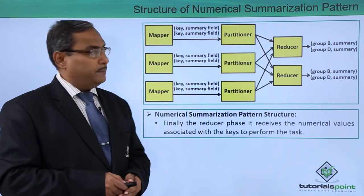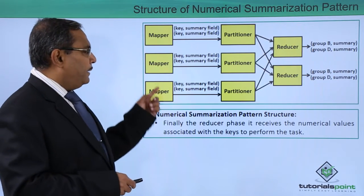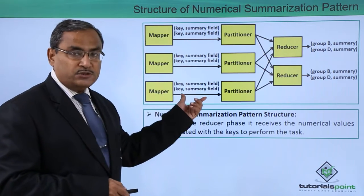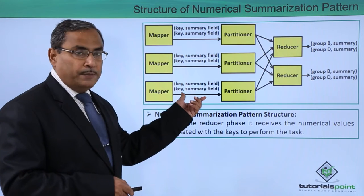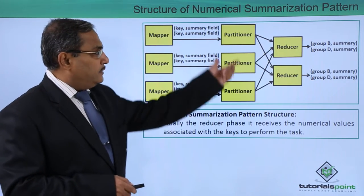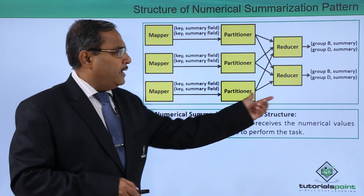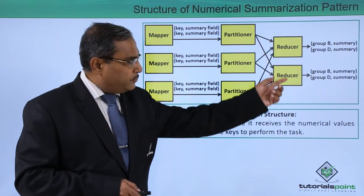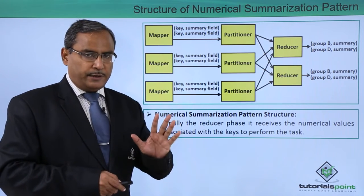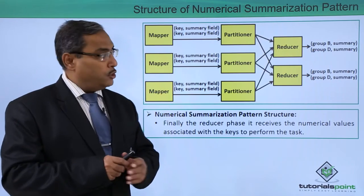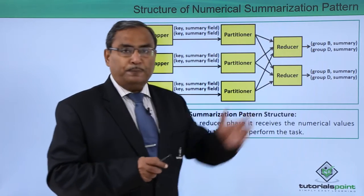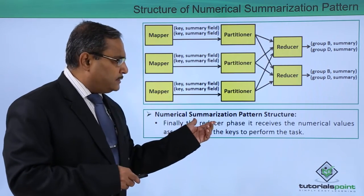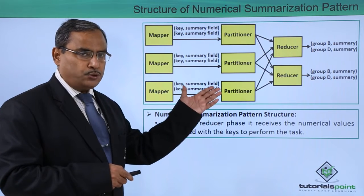Here we have multiple mappers that produce the key and summary field values. These are made available to the respective partitioner, which performs shuffling and sorting. The key-value pairs are then available to the respective reducer, which produces the final summary of the data depending upon the same key values, by applying statistical functions. This is the numerical summarization pattern structure shown in this diagram.